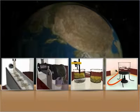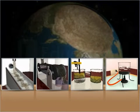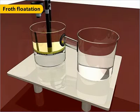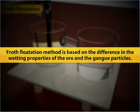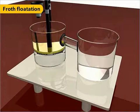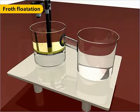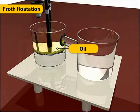The next method used for concentration of ore is the froth flotation method, which is based on the difference in the wetting properties of the ore and the gangue particles. The froth flotation method is used exclusively for sulfide ores, where the ore particles are wetted by oil, while the gangue particles are wetted by water.